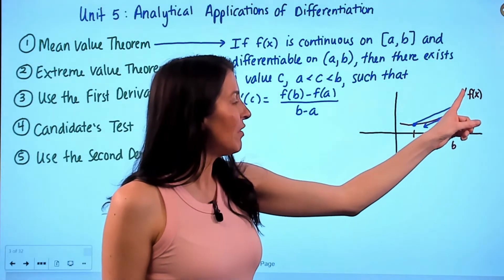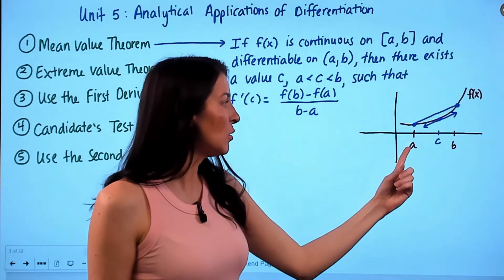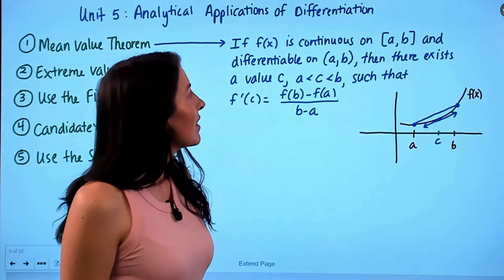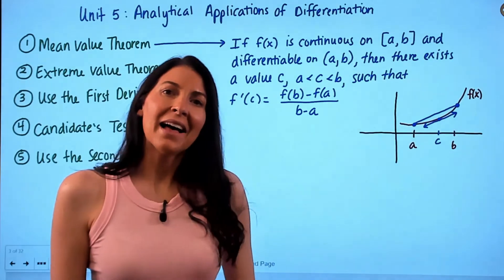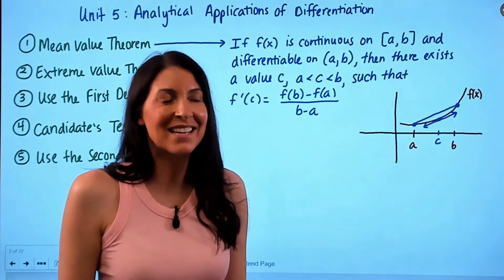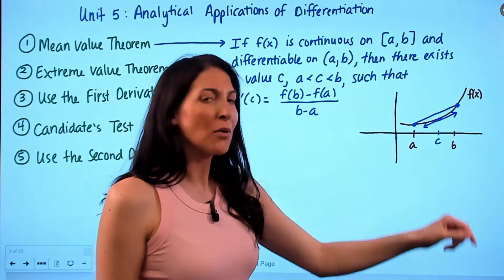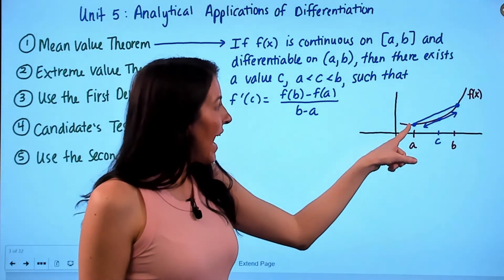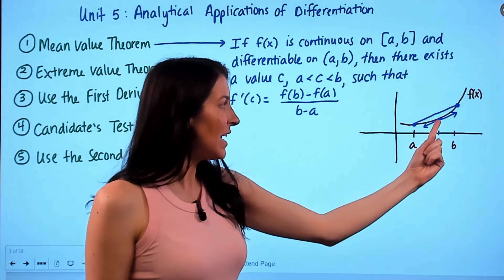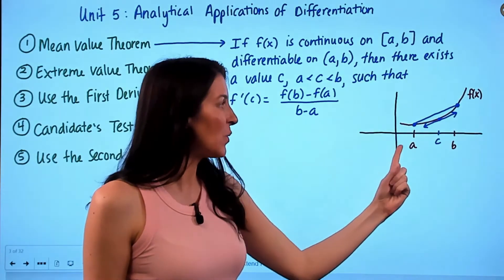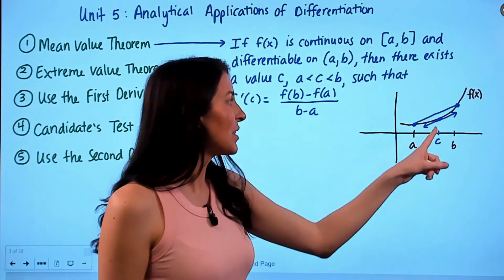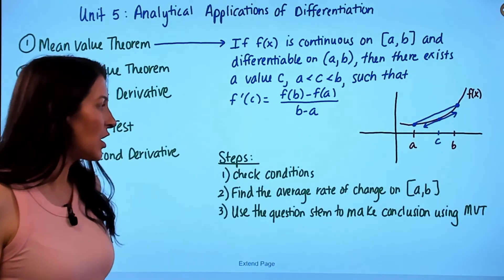Here we have a function f(x) that is continuous on the closed interval [a, b], meaning there are no jumps, holes, or vertical asymptotes. The function is also differentiable on the open interval (a, b), meaning there are no sharp turns, cusps, or vertical tangent lines. When both conditions hold, the average rate of change between a and b — the slope of the secant line — equals the instantaneous rate of change at some value c, which is the slope of the tangent line.